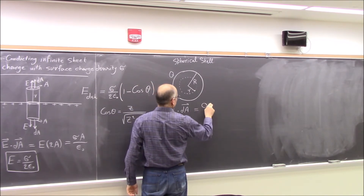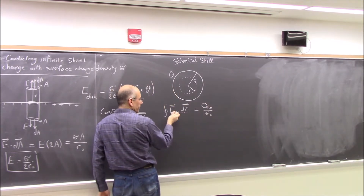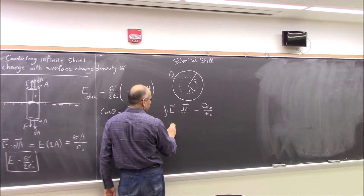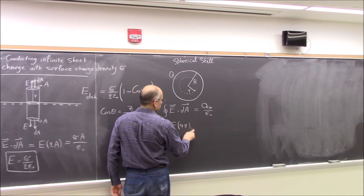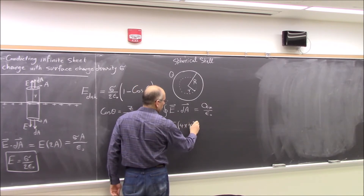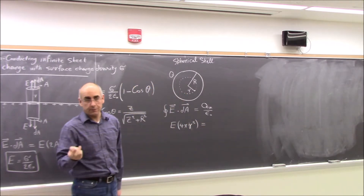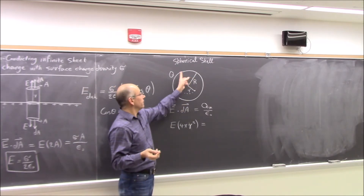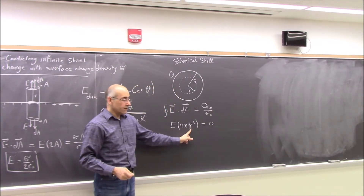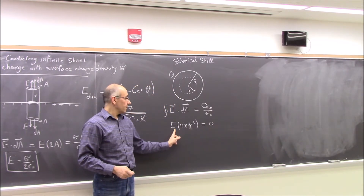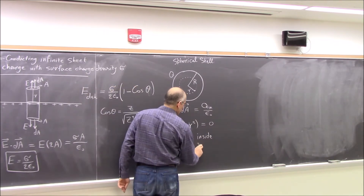That equals Q inside over ε₀. So E times 4πr² equals the charge inside the Gaussian surface. When r is less than R, all the charge is on the shell outside our Gaussian surface — there's no charge inside. So Q inside is zero. And because 4πr² is not zero, E has to be zero. So E is zero inside the shell for r less than R.